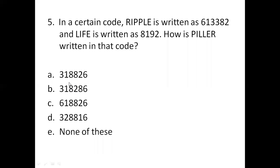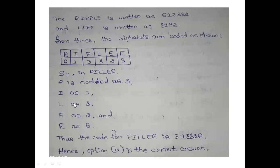Option A, option B, option C are given. So we need to find out the correct answer. The answer is given. The ripple is written as 613382. And life is written as 8192. From these, the alphabets are coded as shown.